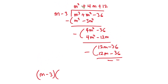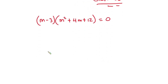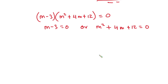So the other factor is m squared plus 4m plus 12, and this must equal zero. We can now say that m minus 3 equals zero, or m squared plus 4m plus 12 equals zero. From the first factor, m equals 3.